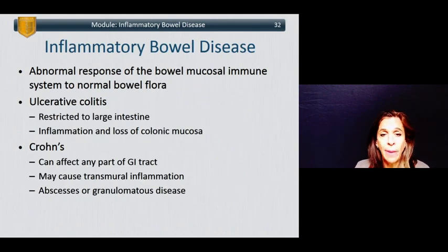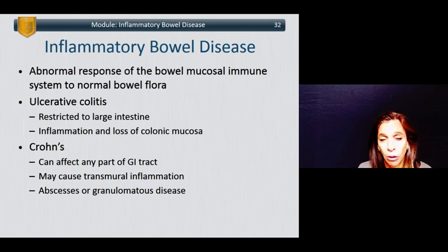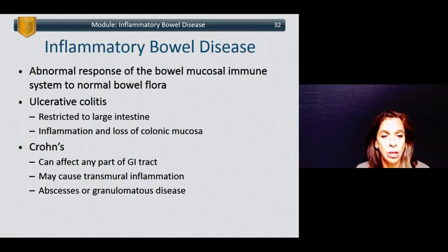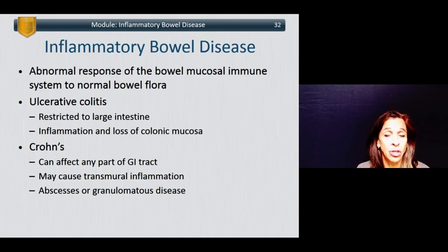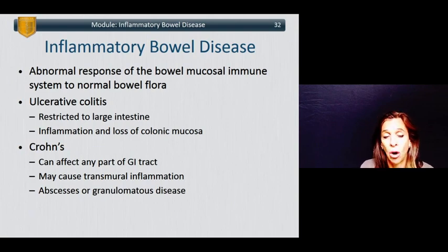Inflammatory bowel disease is caused by an abnormal response of the bowel mucosal immune system to normal bowel flora. Ulcerative colitis is restricted to the large intestine, with inflammation and loss of colonic mucosa. Crohn's disease can affect any part of the GI tract from mouth to anus, and may cause transmural inflammation and perforation of the bowel — abscesses and granulomatous disease are common.